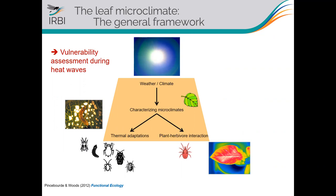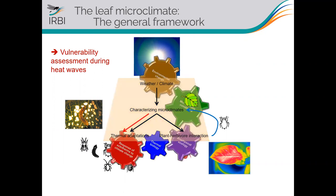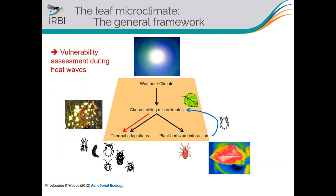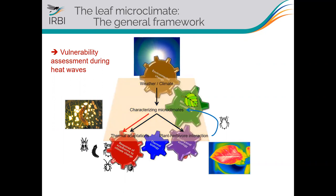This schematic view shows what we do at our institute. The first step is to characterize the leaf microclimate depending on weather and climatic conditions. Then we look at the interaction between leaf temperature and plant-herbivore interactions. Most importantly, we study the feedback effect the herbivore can have on its own microclimate, generating novel microclimate at the leaf surface. We study how this novel macroclimate drives thermal adaptations at the community level, and ultimately use this framework to assess vulnerability to heat waves and extreme events.